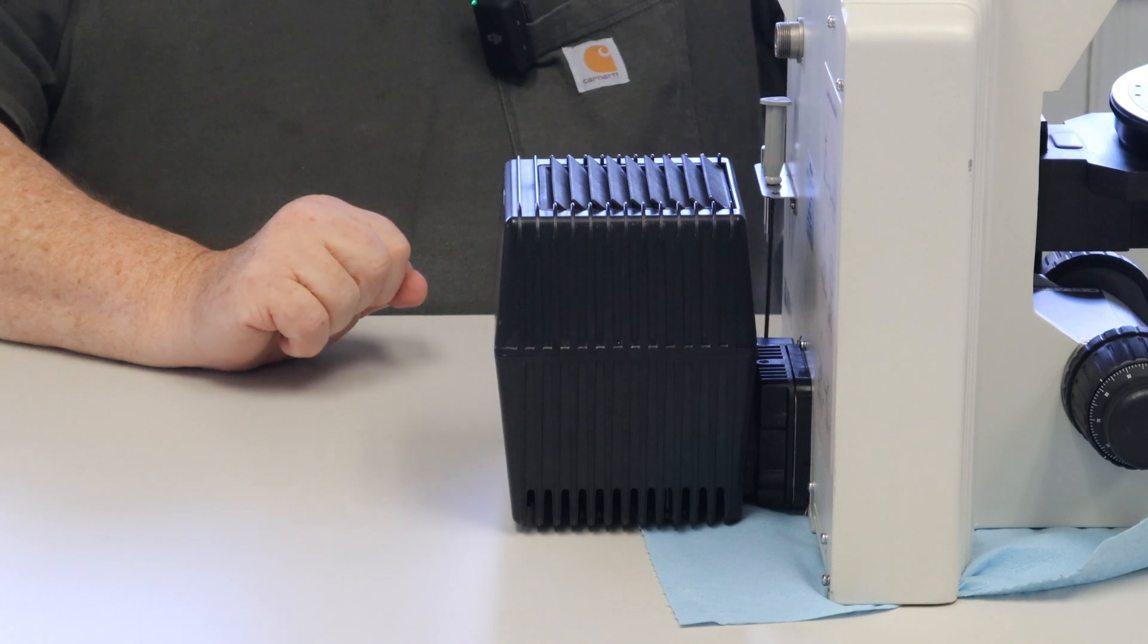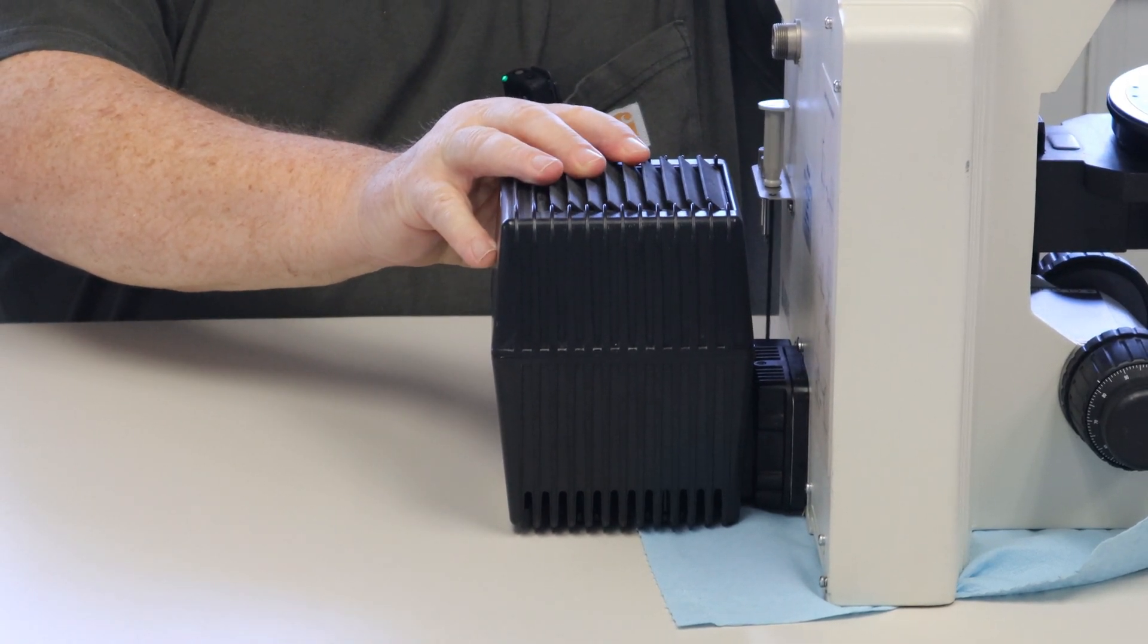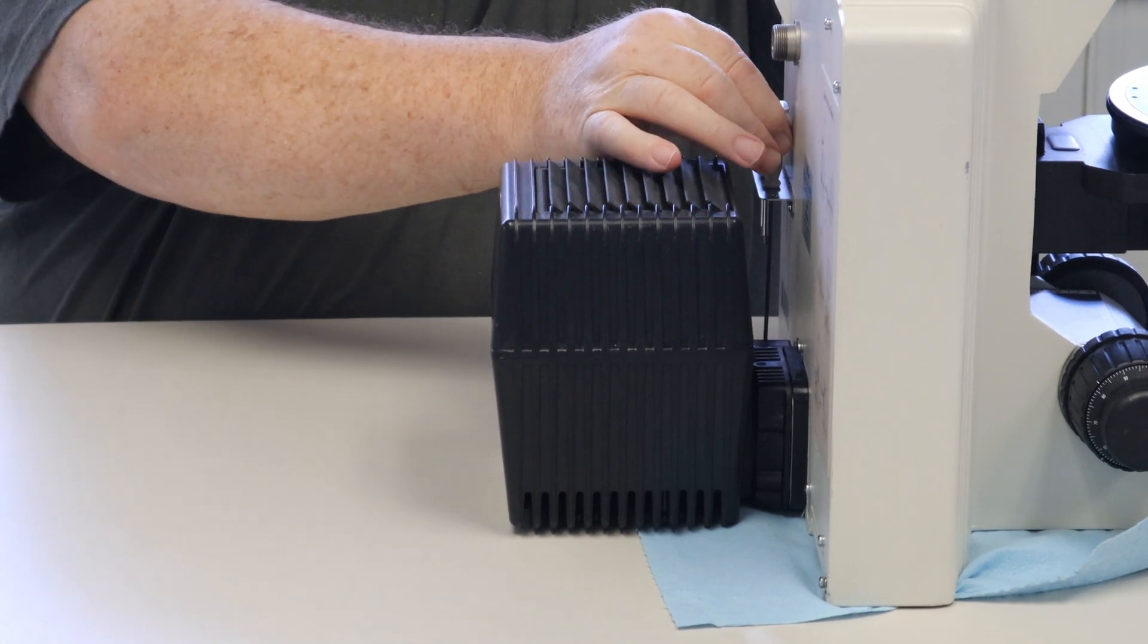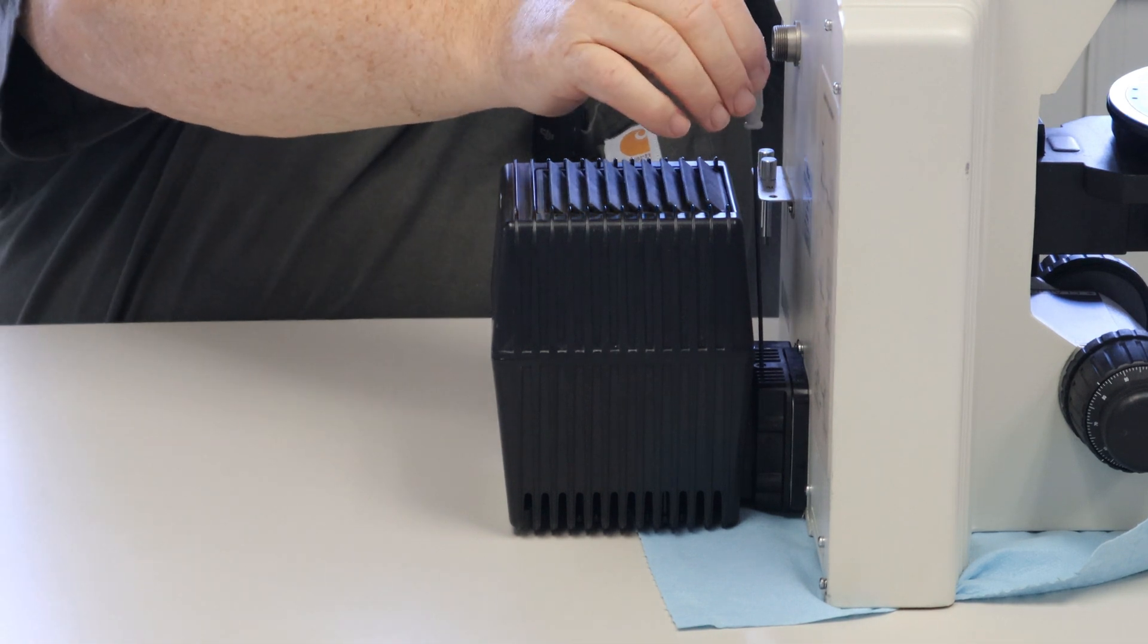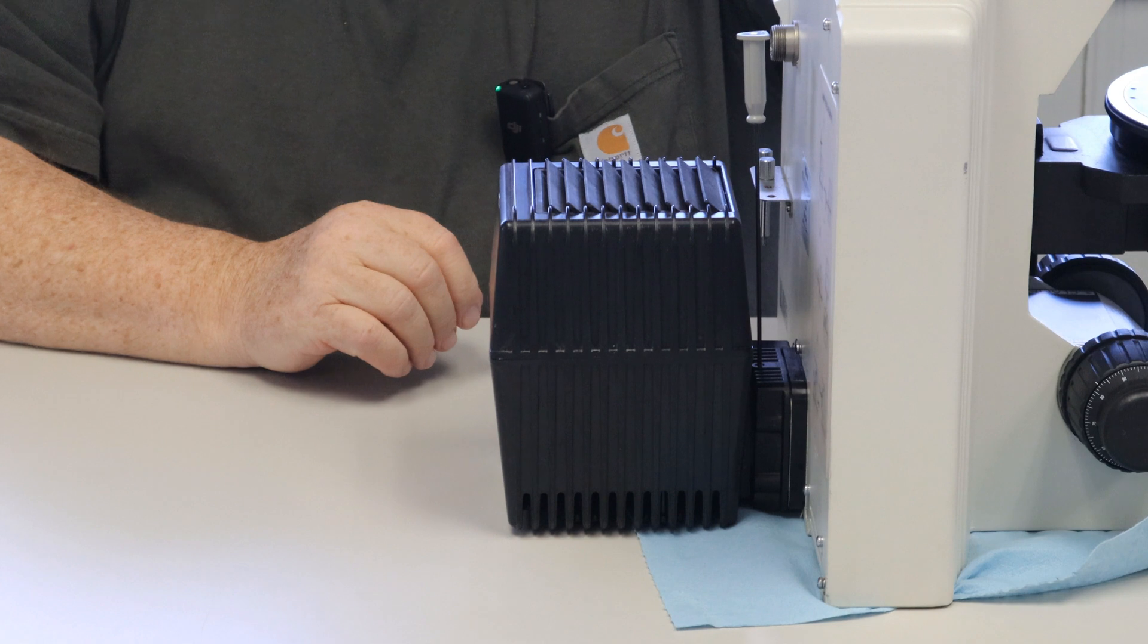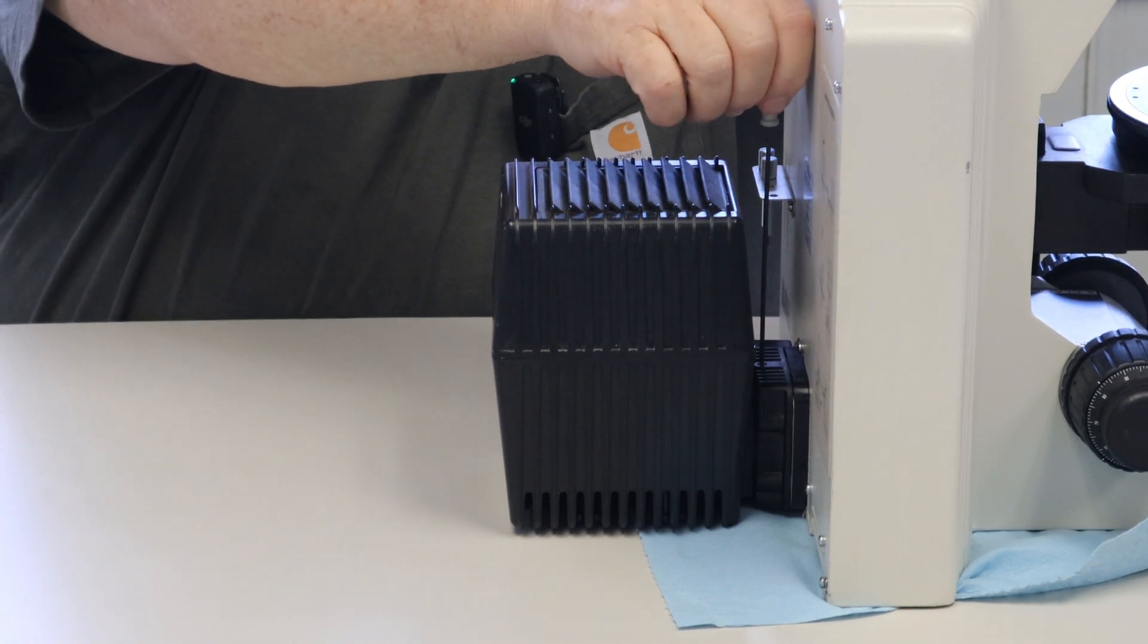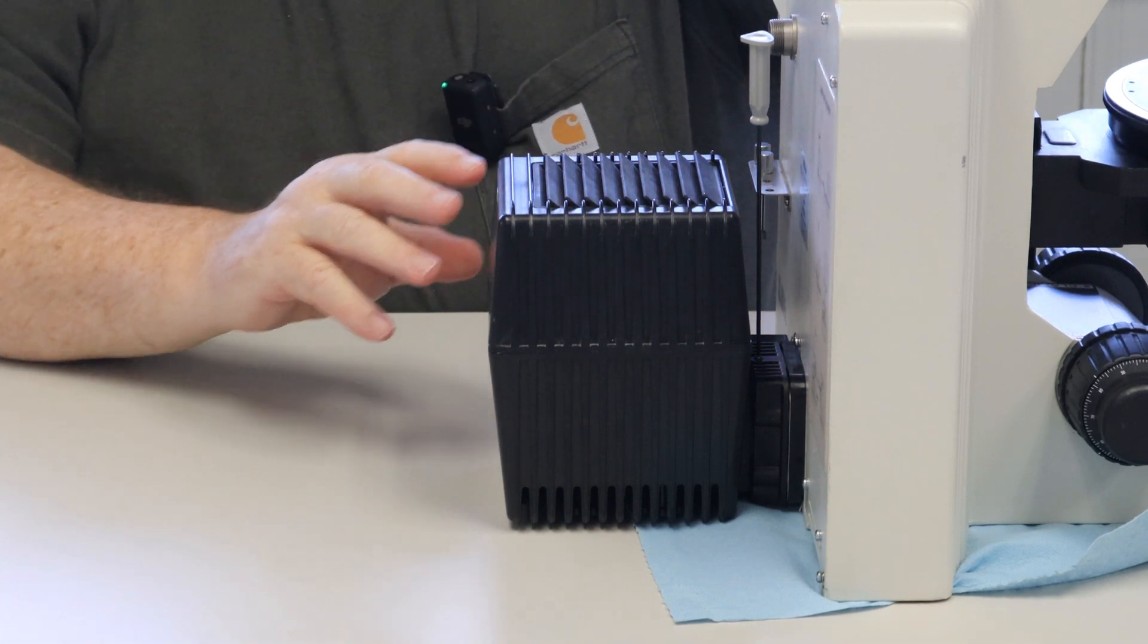To change the bulb in this lamp housing, you have a handy wrench. Nikon gives you one with every scope. It goes right into the screw right here in the middle of the lamp housing. You can simply turn that and pull off the lamp housing.